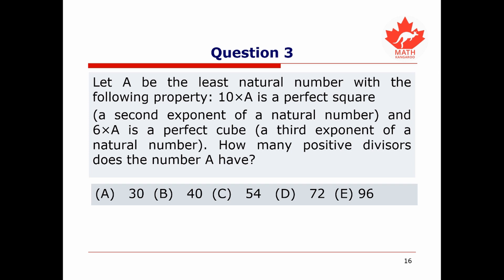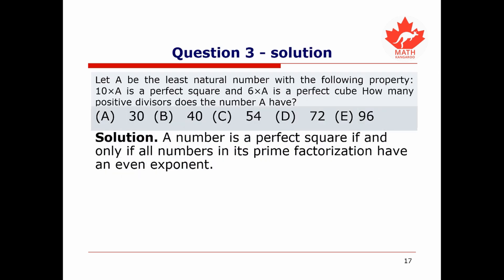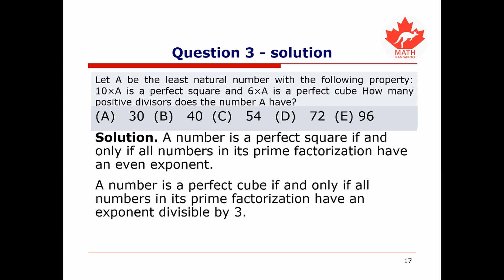We're now ready to solve our third and final question. Let a be the least natural number such that 10 times a is a perfect square and 6 times a is a perfect cube. How many positive divisors does a have? A perfect square is a number whose prime factorization has all prime exponents even. A perfect cube is a number whose prime factorization has all prime exponents divisible by 3. Since 10 equals 2 times 5, we have 2 times 5 times a must be a perfect square, so all its prime exponents must be even.